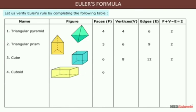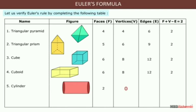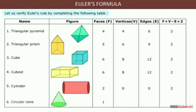A cuboid has 6 faces, 8 vertices, and 12 edges. 6 + 8 = 14, minus 12 equals 2. A cylinder has 2 faces, 0 vertices, and 0 edges, so the result is 2. A circular cone has 1 face, 1 vertex, and 0 edges. So 1 + 1 = 2, minus 0 equals 2.